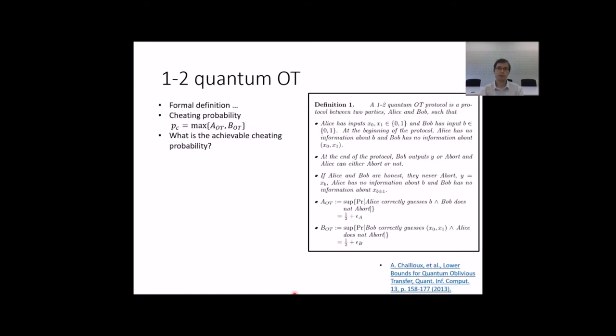The formal definition follows the basic idea. Note that parties can abort communication. We are mainly concerned about cheating probabilities A and B. Supremas in the definitions, here and here, are taken over all cheating strategies. These probabilities express the ability of parties to reveal what should remain hidden. To keep it simple, we speak of a cheating probability which is a maximum of A and B.